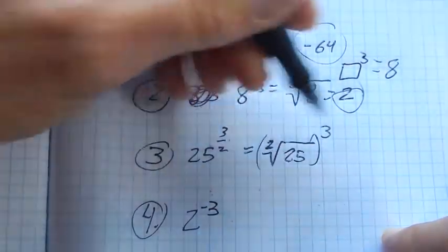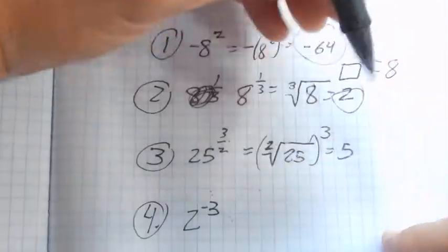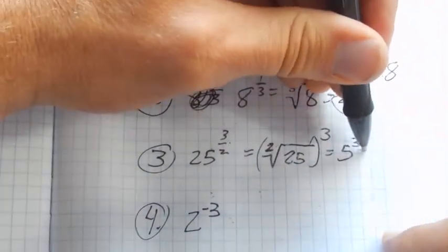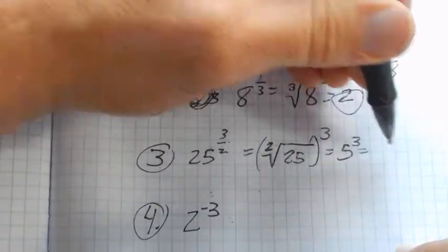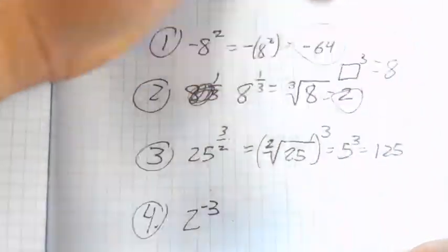And then this 3 means that the whole thing's cubed. So I can go square root of 25 is 5, but then that's still cubed. So now I have 5 times itself 3 times, which is 125.